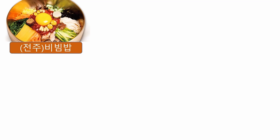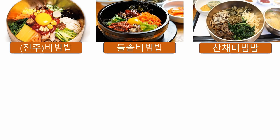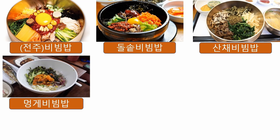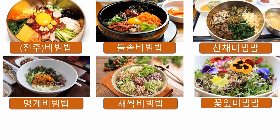This is Jeonju bibimbap, which originated in the Jeonju region — the most representative bibimbap. There is also 돌솥 bibimbap: as you learned, 돌 is stone, so it's stone pot bibimbap — a hot one. 산채 bibimbap uses mountain vegetables. 멍게 bibimbap is sea squirt bibimbap. 새싹 bibimbap is sprout bibimbap. And 꽃잎 bibimbap is petal bibimbap.